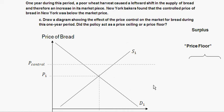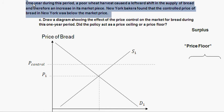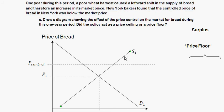Moving to Part C: one year during this period, a poor wheat harvest caused a leftward shift in the supply of bread and an increase in its market price. New York bakers found that the controlled price of bread was now below the market price. Part C asks us to draw a diagram showing the effect of this price control during this one-year period and whether it acted as a price floor or price ceiling.